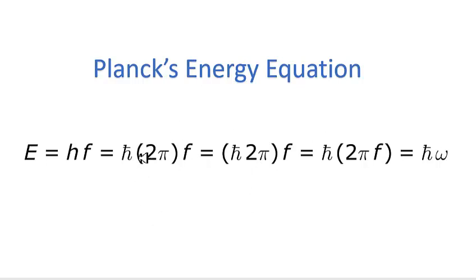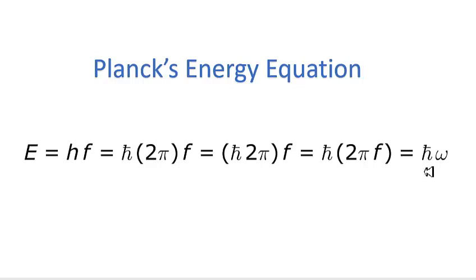I call this the hot potato. 2 pi is the hot potato of the language of theoretical physics, because they keep passing it around like a hot potato — sometimes it's grouped here, sometimes it's grouped there. You have to be really careful about where this hot potato is if you want to get your numbers right.